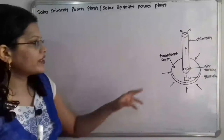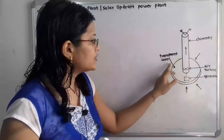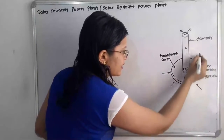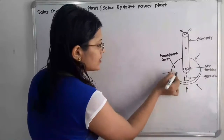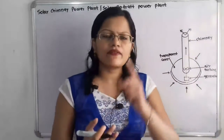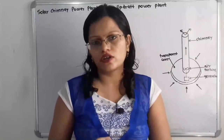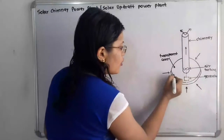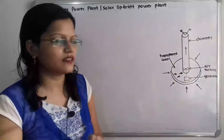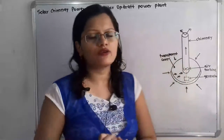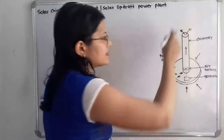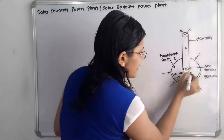The solar chimney structure has a chimney at the center surrounded by a transparent cover forming a greenhouse. Cold air enters from all sides of the greenhouse. When solar energy is incident on the transparent cover, it passes through and is absorbed by the cold air. The air becomes hot and, due to convection, is drawn up through the central chimney and exits outside.